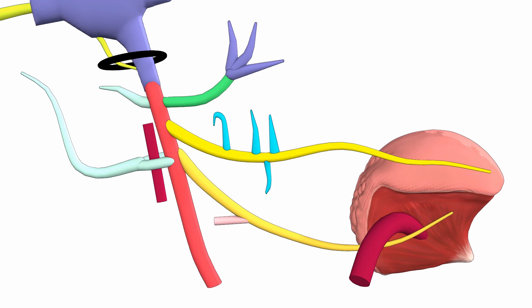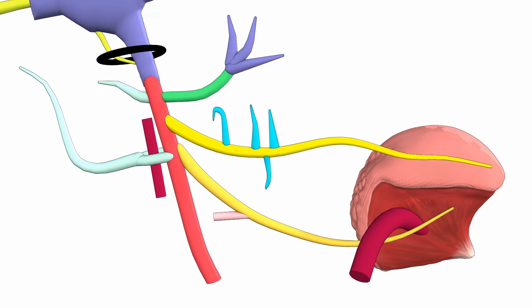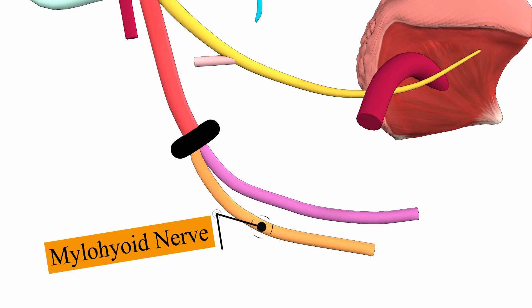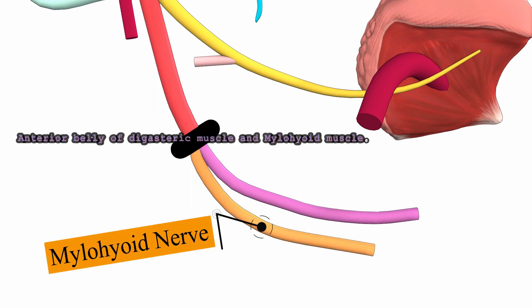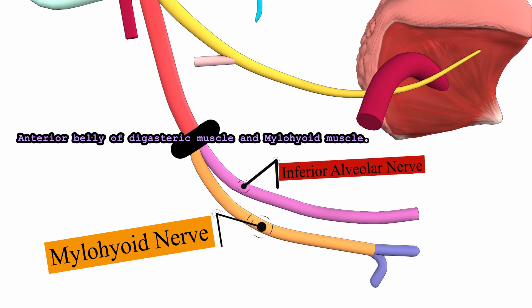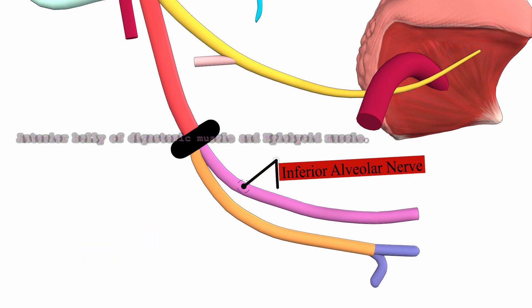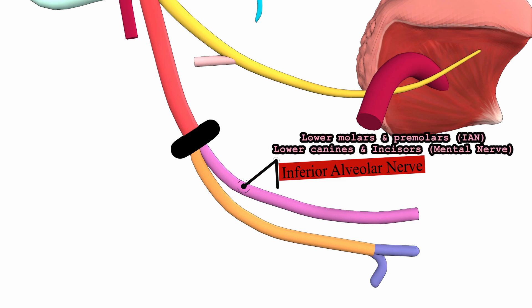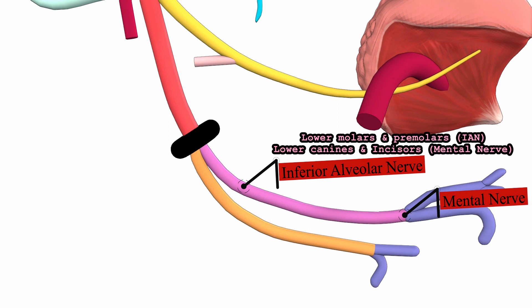The inferior alveolar nerve moves downward medial to the mandible. Before it enters the mandibular foramen, it gives off the mylohyoid nerve, which passes in the mylohyoid groove medial to the mandible to supply the anterior belly of the digastric muscle and the mylohyoid muscle. The inferior alveolar nerve enters the mandibular canal through the mandibular foramen, giving dental branches supplying the lower molars and premolars, then leaves through the mental foramen to supply the lower canine and incisors.